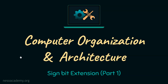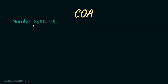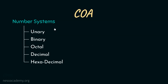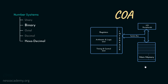Hello everyone and welcome back. In this session, we are going to observe the sign bit extension part 1. But before diving straight into the context, today we would like to observe the roadmap which we have been following so far. We are in the course of COA. In this chapter, we have been learning about number systems — unary, binary, octal, decimal, and hexadecimal. COA basically deals with the architecture of the computer, and that is the reason why among all the number systems, we were mainly focusing on binary and hexadecimal.